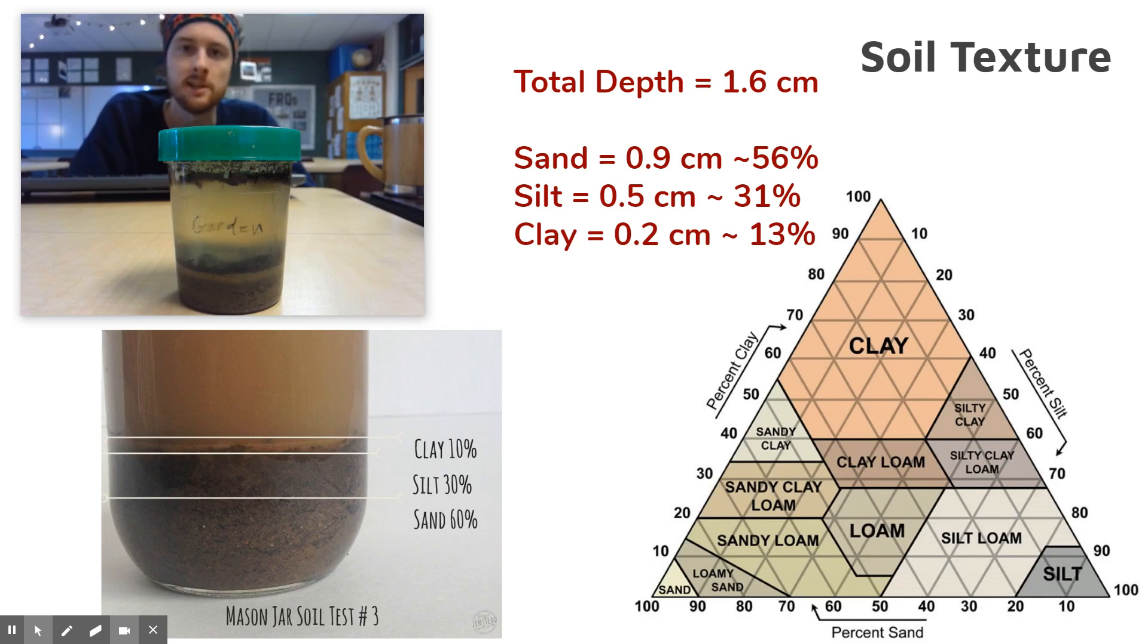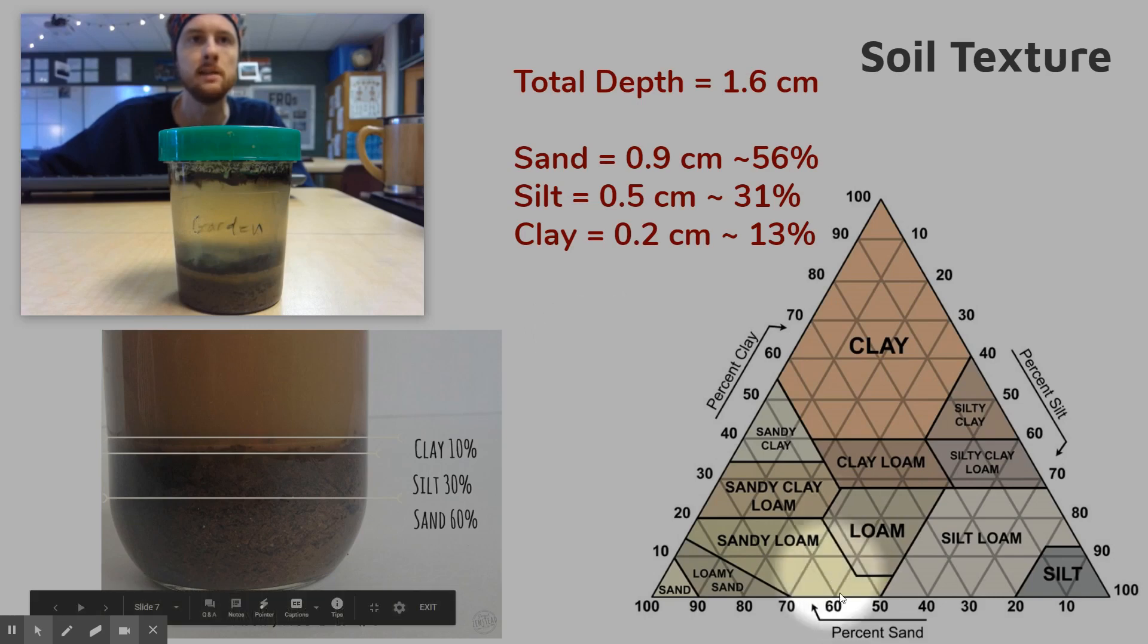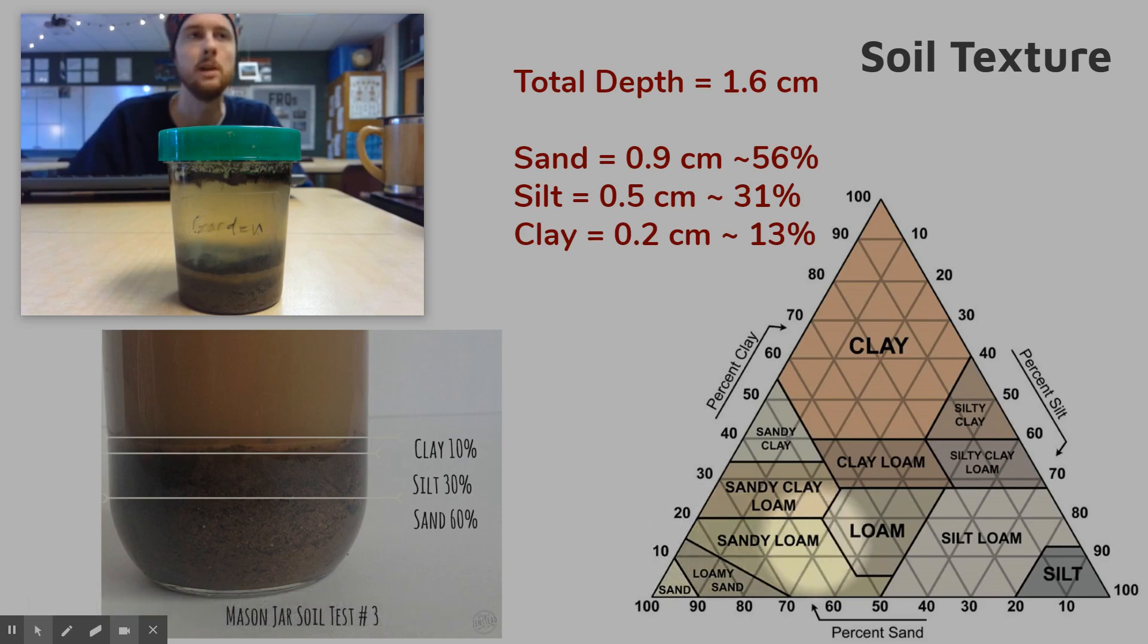This fits somewhat with the sandy loam soils that I know are characteristic of West Michigan. What we can do then is find where this would fall on our soil texture triangle. I like to start with the percent sand, so we'd go down between 50 and 60 because we're at 56%. Then I'm going to go with the percent silt to where it meets the 30% silt. If we look over at the clay, we are between 10 and 20, so we would be right here in the sandy loam category.